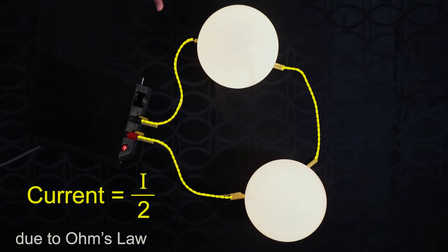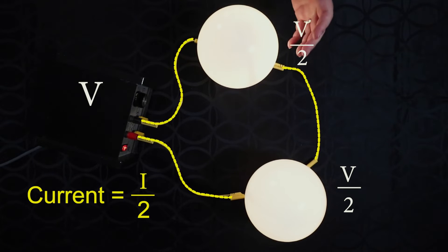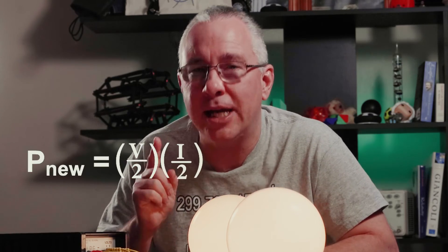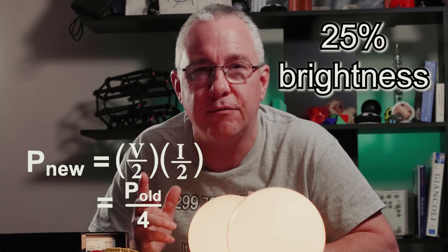In effect, it delivers half the amount of energy for the whole circuit per given time. But that energy is now shared across two globes. So each globe emits half of that again. The end result is that the globe transforms a quarter of the energy compared to the original.